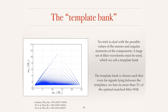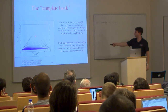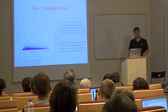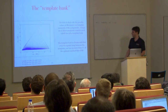This reduces the problem to a four-dimensional search over the two masses and two angular momenta. We handle this by brute force — creating a large set of filter waveforms, called a template bank, covering this full four-dimensional parameter space. For higher mass systems, waveforms are shorter and you need a less dense set. For binary neutron stars, you need quite a dense set. We aim to ensure that no signal loses more than about three percent of its signal power.